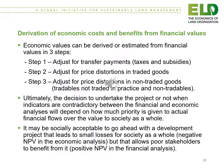Economic values can be derived from financial values in three steps. Step one is the adjustment for transfer payments, including taxes and subsidies. Step two is the adjustment for price distortions in traded goods. Step three is the adjustment for price distortions in non-traded goods, which include tradables that are not traded in practice and non-tradables. Ultimately, the decision to undertake a project when indicators are contradictory between the financial and economic analysis will depend on how much priority is given to actual financial flows over the value to society as a whole.